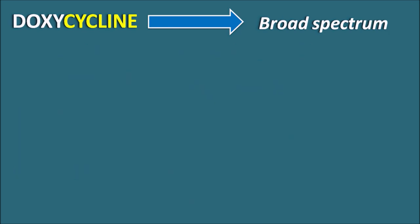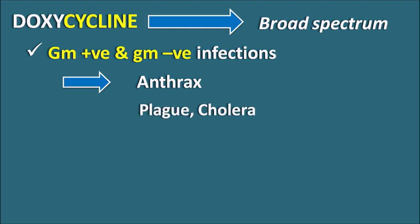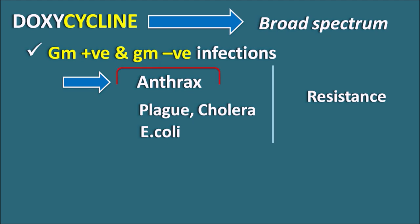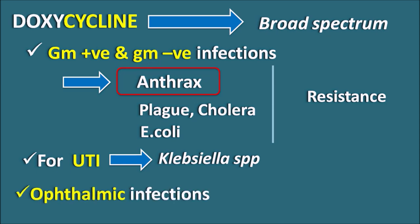Doxycycline is useful in gram-positive as well as gram-negative infections. It can be used to treat anthrax, plague, and cholera, and is also effective against E. coli infections. However, one limitation in some of these infections is the development of resistance, which is why doxycycline is more preferred for anthrax over fluoroquinolones and penicillins. It can also be used to treat urinary tract infections (UTI) produced by Klebsiella species, and ophthalmic infections produced by Chlamydia species.